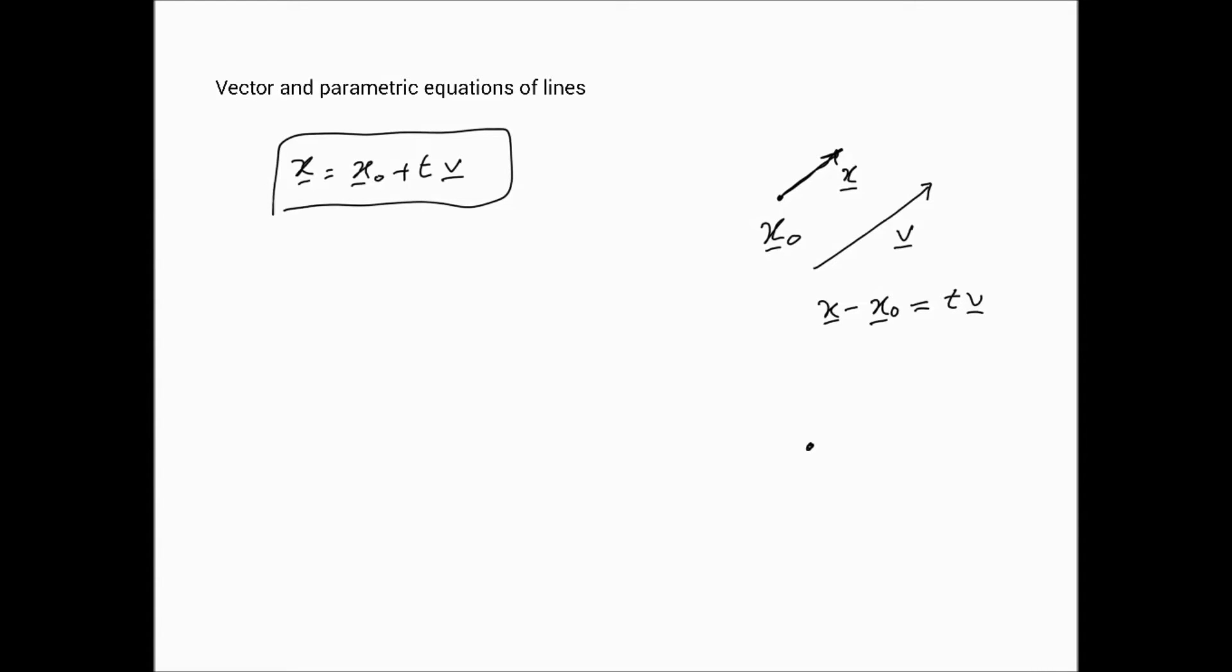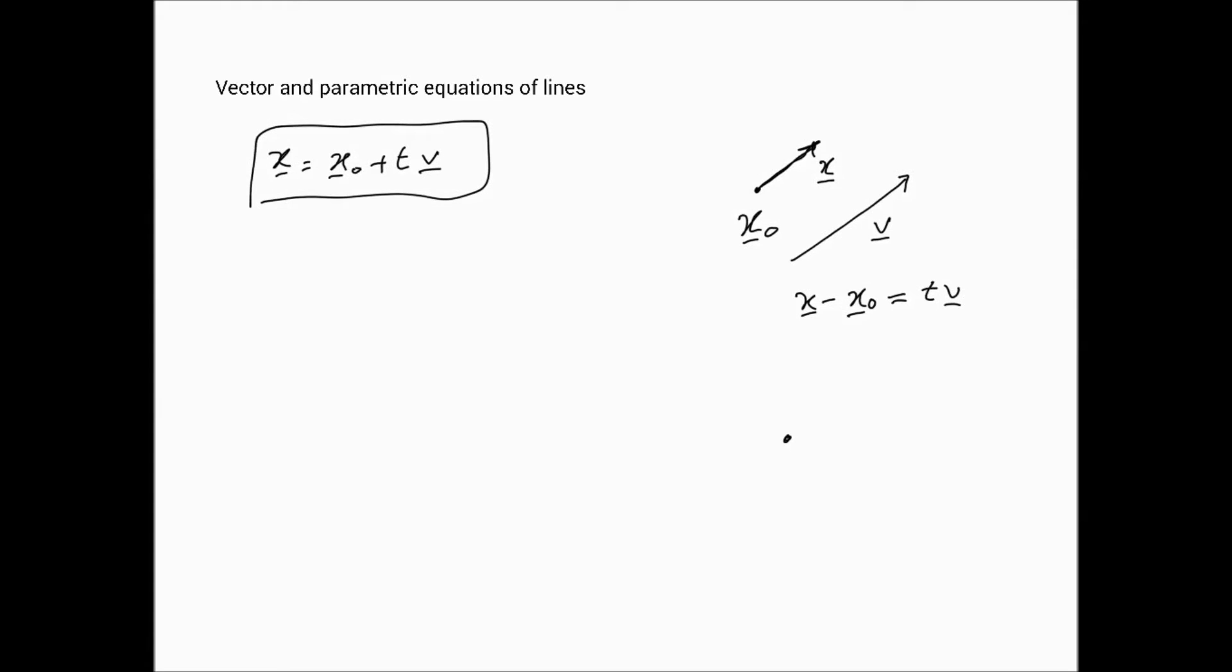In order to now extend this idea to that of a plane, if we imagine that x0 is a point in this plane, and let us assume that we have non-collinear vectors v1 and v2, that are not on the same line.